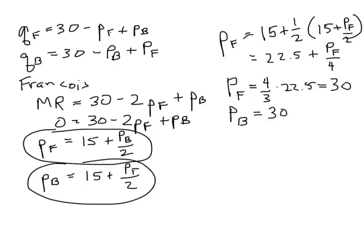Babette's price is 15 plus one-half times 30, which is also 30. It makes sense, right? It's a symmetric problem, so if we had gotten a different number than 30, we'd have to ask what's going on.